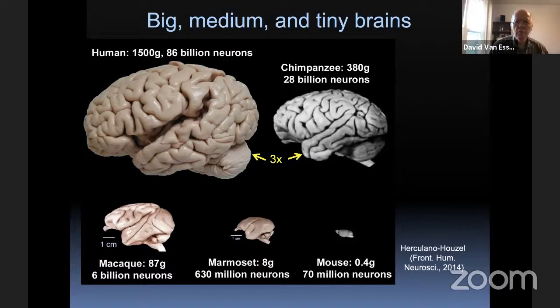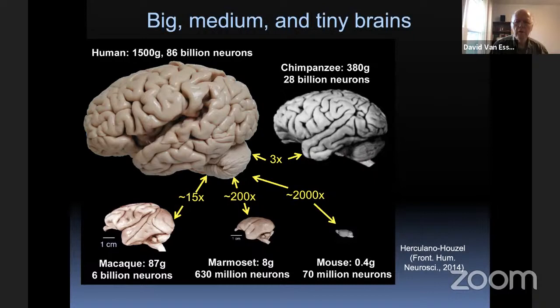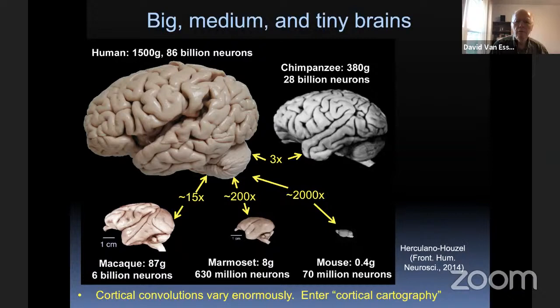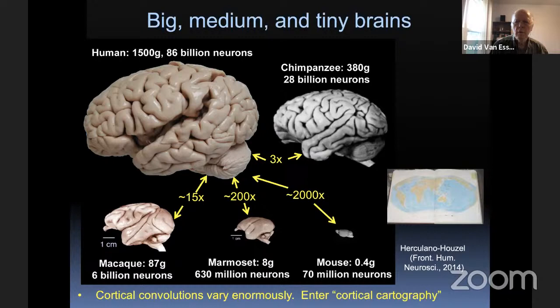Our brains are about three times larger than that of our closest living relative, the chimpanzee. We're 15 times larger than the intensively studied macaque monkey, 200 times larger than the marmoset — an increasingly popular experimental preparation for primate studies — and 2,000 times larger than the intensively studied mouse brain. You can also see at a glance that the cortical convolutions vary enormously in the degree and pattern of folding, and it's those folds that made me a cortical cartographer when I started working almost 50 years ago on the macaque monkey cerebral cortex.